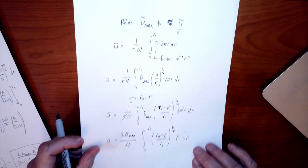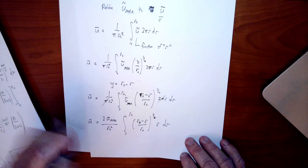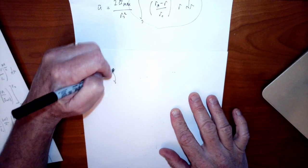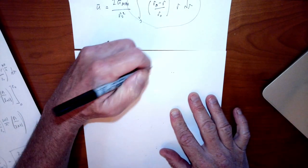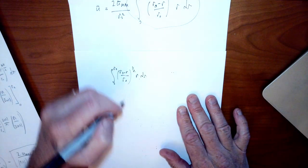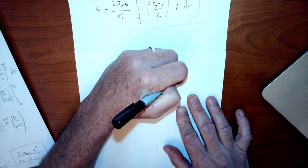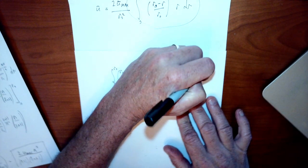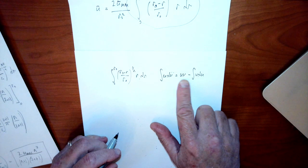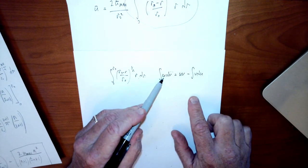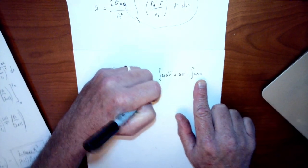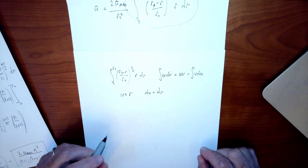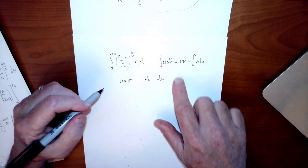I'll recall the integration by parts formula and focus just on that integral: the integral from 0 to r₀ of (r₀ − r)/r₀ to the 1/n power times r dr. The integration by parts formula is ∫u dv = uv − ∫v du. I'm going to let u = r, so du = dr. That gets rid of the r factor, which is the whole point of integration by parts here.